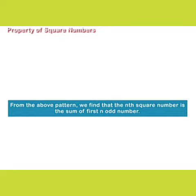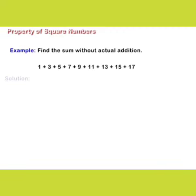Let us take an example. Find the sum without actual addition: 1 + 3 + 5 + 7 + 9 + 11 + 13 + 15 + 17.